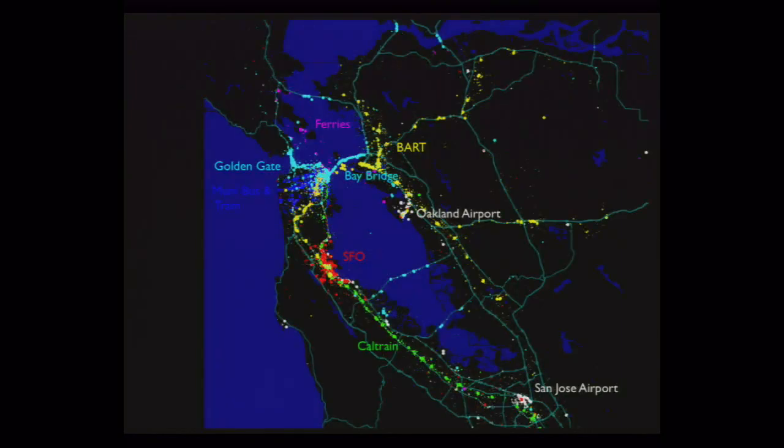This data can also be obviously sliced by time. This would be showing you the tweets over time so that you can actually get a picture of how people use different parts of the city at different times of the day.